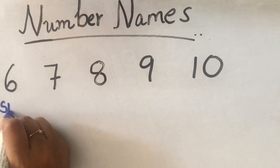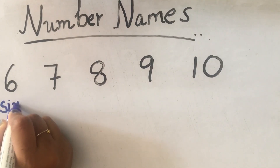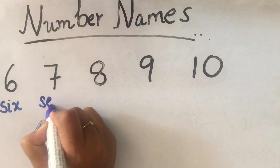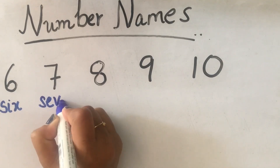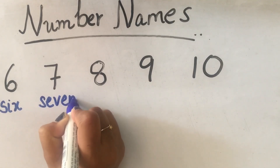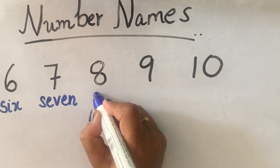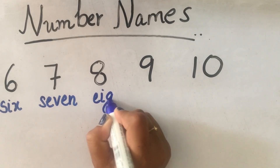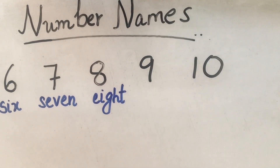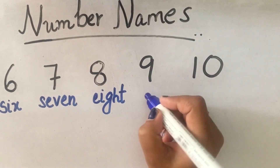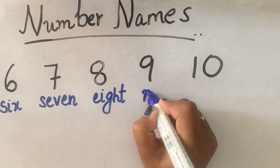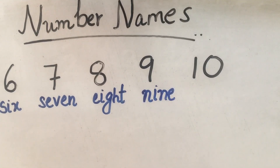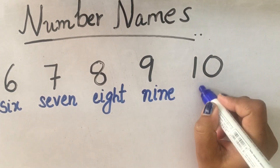So 6 is S-I-X, 7 is S-E-V-E-N, 8 is E-I-G-H-T, 9 is N-I-N-E, and the last is 10.